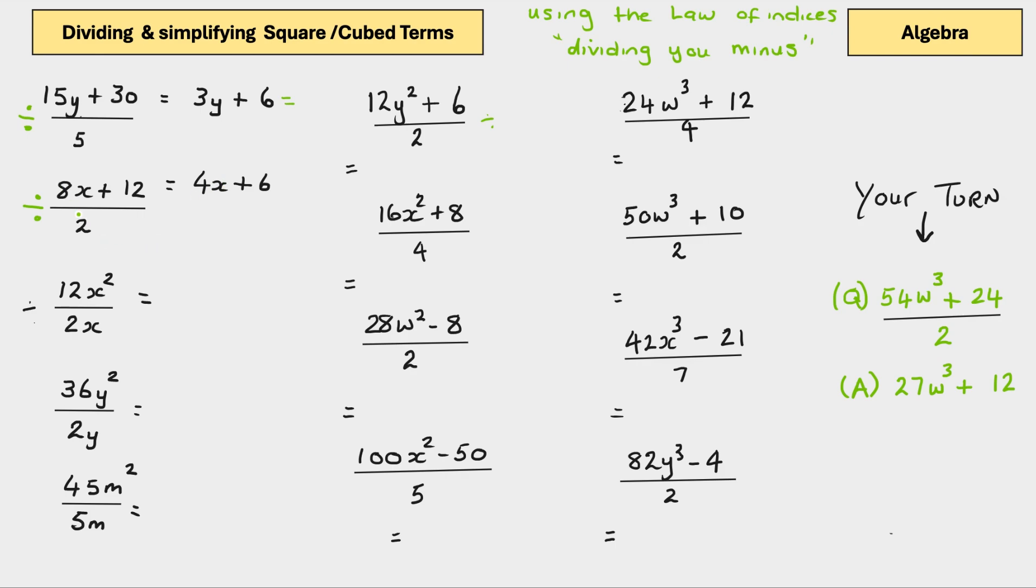Another example, 8x plus 12 divided by 2. We always divide the numbers first. 2 divided by 8 is 4. It's attached to an x. 2 divided by 12 is 6. So, it's 4x plus 6.